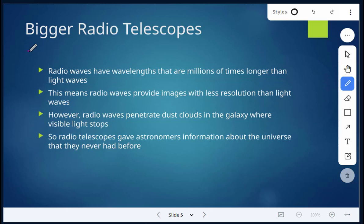But these radio waves are able to penetrate dust clouds in the galaxy where visible light stops. So these radio telescopes were able to give astronomers information about the universe that they never had before from just exploring visible light.